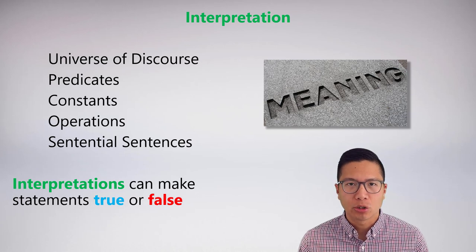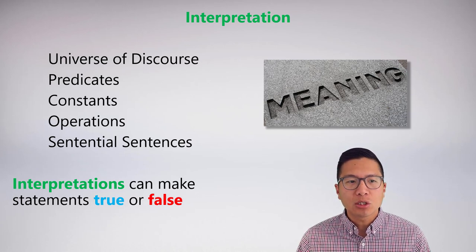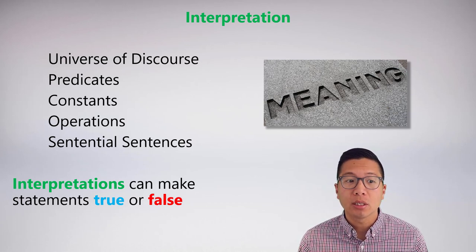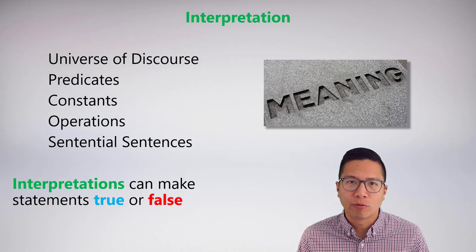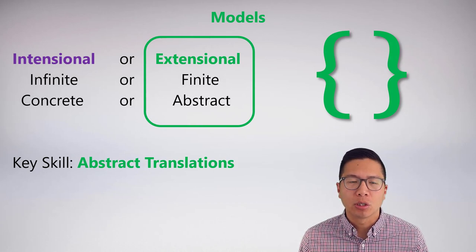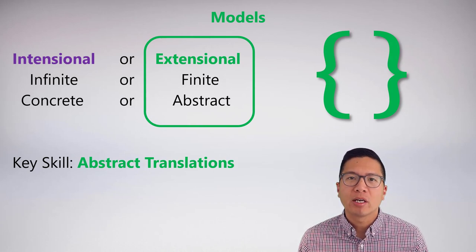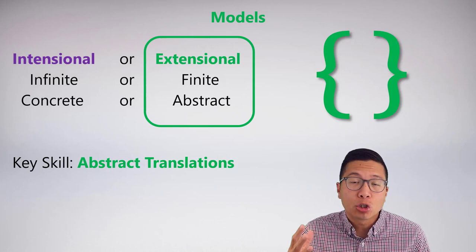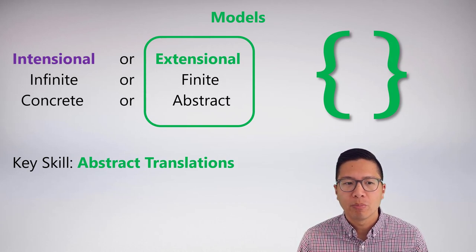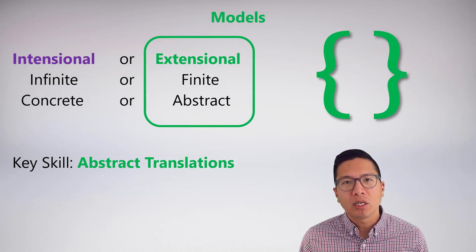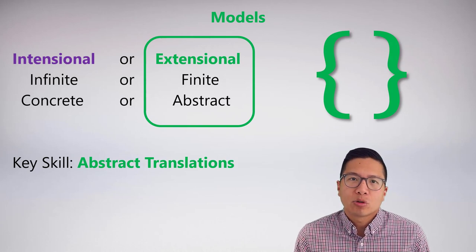We know that we can construct interpretations, and these interpretations essentially tell us the meaning of all these things, like the universe of discourse, the predicates, the constants, etc. We also know that interpretations can make statements true or false. What we're going to focus on in this video is a particular type of interpretation, which is an extensional finite abstract model. A model is just an interpretation that is intended to show or demonstrate some sort of semantic property. The key skill we need to adopt here is how to do abstract translations.